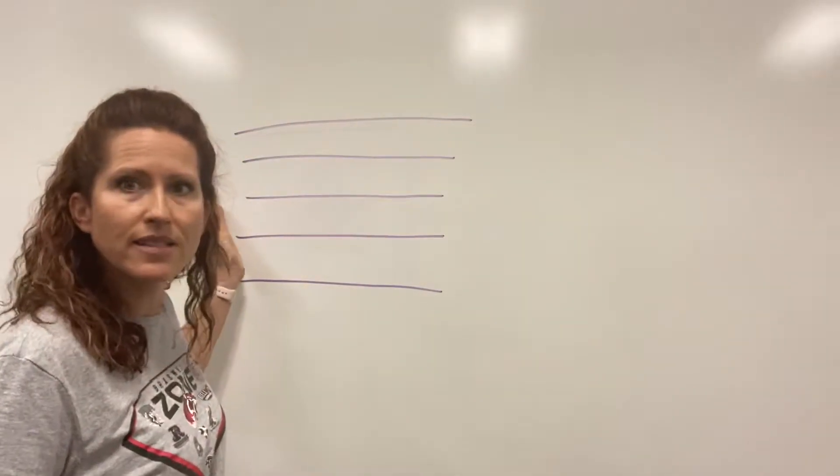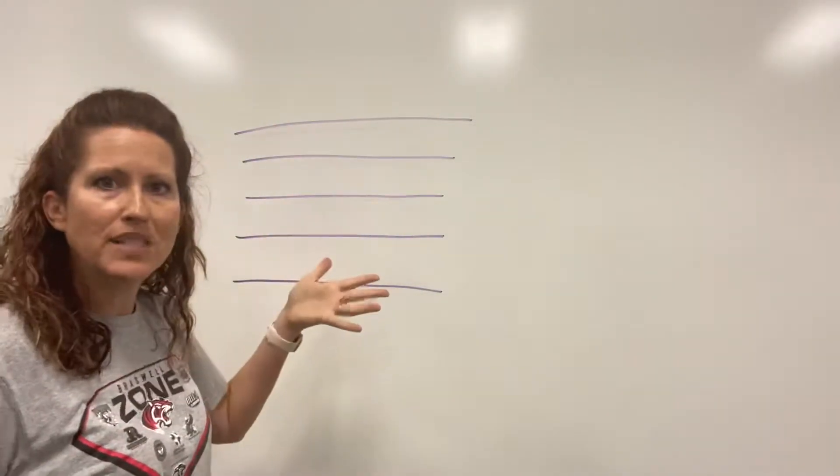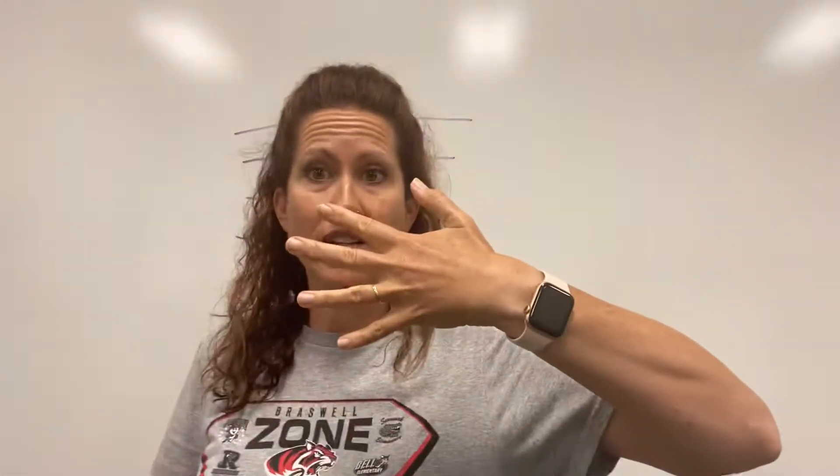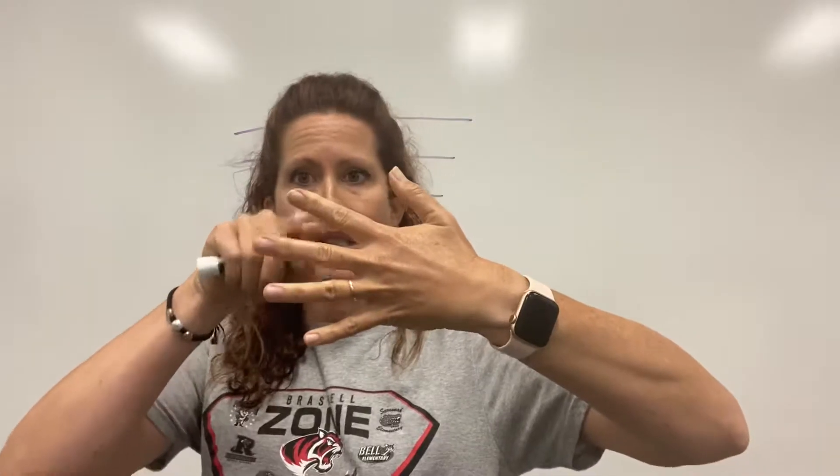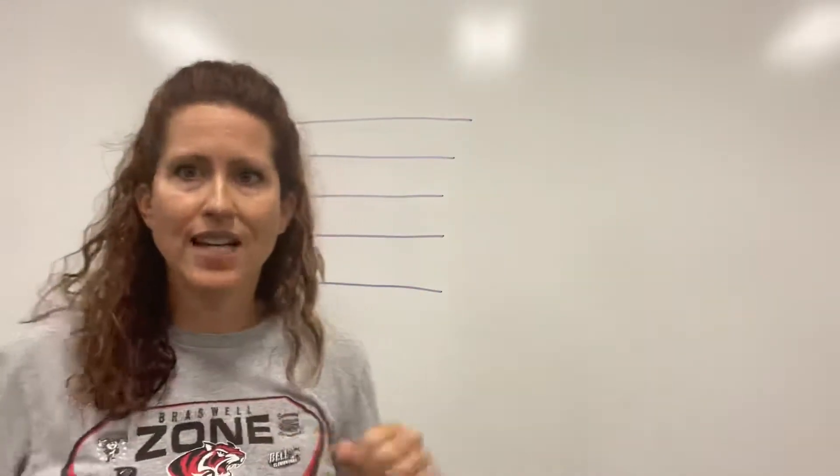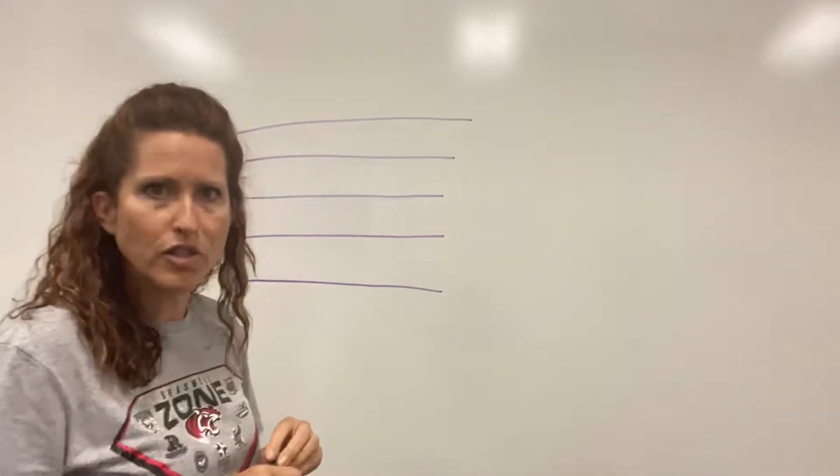So this is our staff. This is my staff and it has lines and spaces on it and you have a staff right here. I got my lines and my little spaces, right? So you can have a hand staff or you can do it on the board or on paper or whatever you want to do.